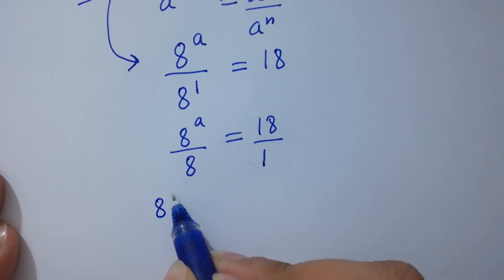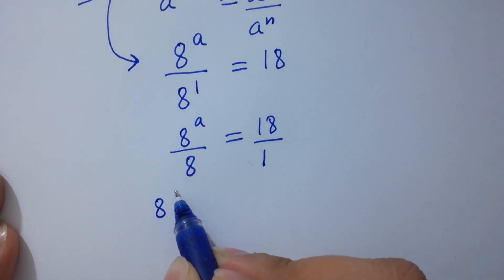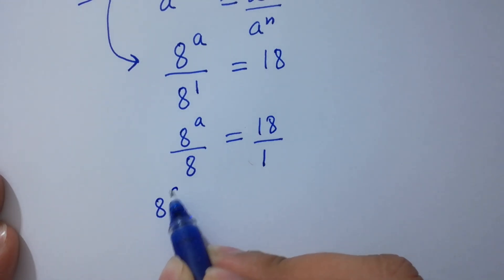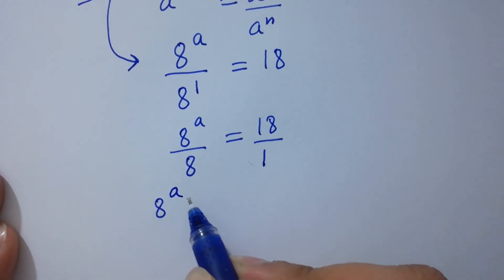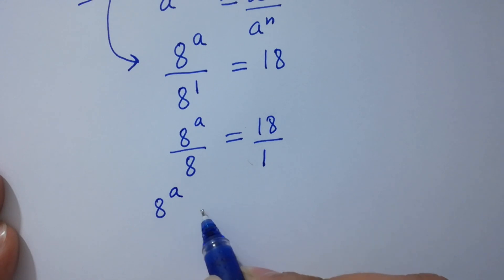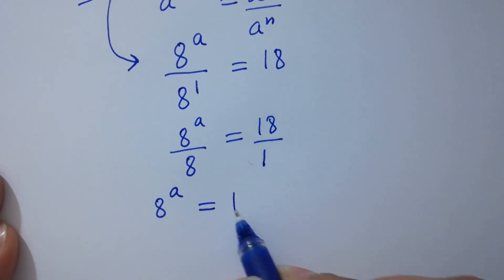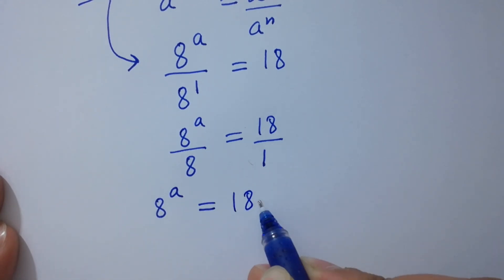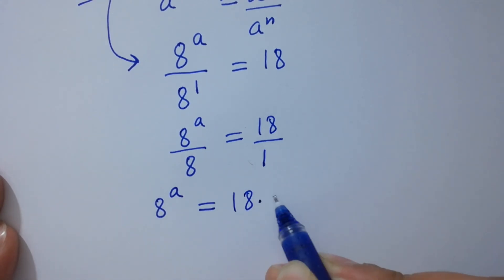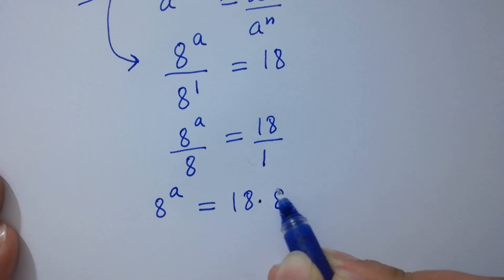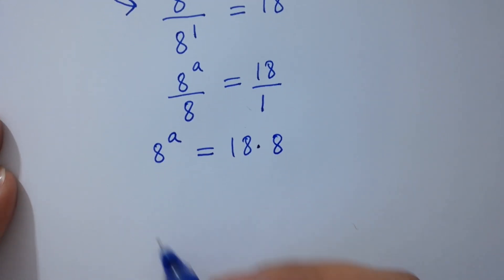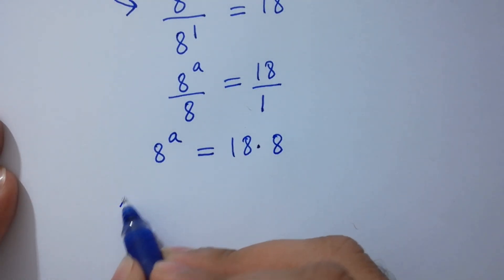By cross multiplication, we have 8 to the power a times 1, so 8 to the power a equals 18 times 8. Take log on both sides.